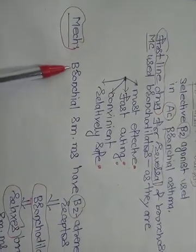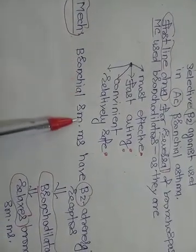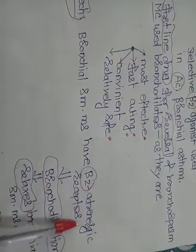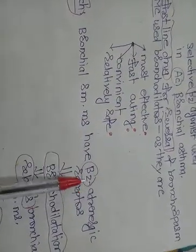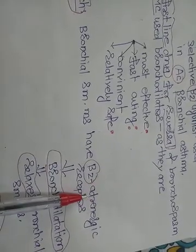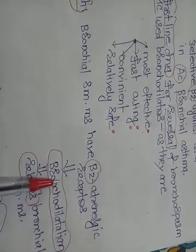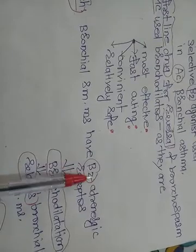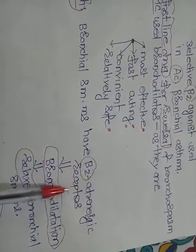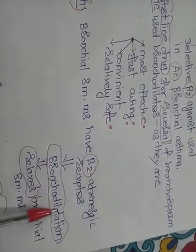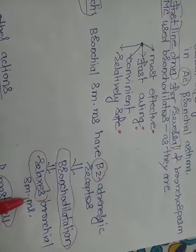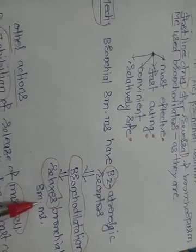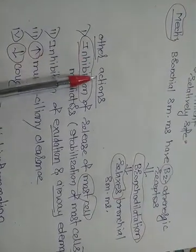What is the mechanism of action? Bronchial smooth muscles have beta-2 adrenergic receptors. By stimulating these beta-2 adrenergic receptors, salbutamol causes bronchodilation — that means it relaxes the bronchial smooth muscles. That is why it is used in bronchial asthma.